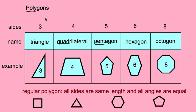Here we are with polygons. 'Poly' means many, and on top we have the number of sides: three, four, five, six, eight. Below we have the names. A triangle is a three-sided figure — 'tri' means three — and you can see it has three angles. Triangle also means it has three sides.